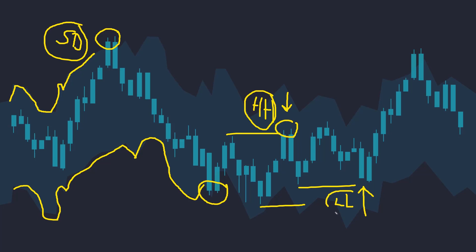The last way to time mean reversion entries is to simply look at the moving average, indicated by this purple line, and enter against the shorter-term momentum in the market when the price gets too far from the moving average. At this point the price is stretched too far above the moving average, so this would be a point at which you sell. Similarly, at this point the price is stretched too far below the moving average — a mean reversion long entry.